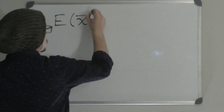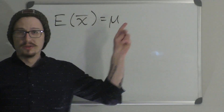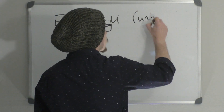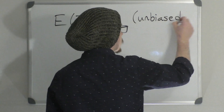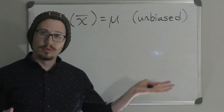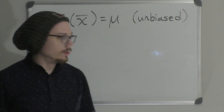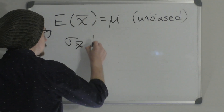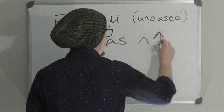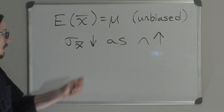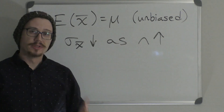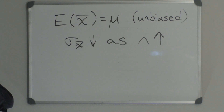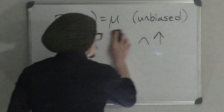To summarize the characteristics of the sample mean: first, the expected value of the sample mean equals the population mean of X, which tells us X-bar is an unbiased estimator of mu. Second, the standard error goes down as the sample size increases.